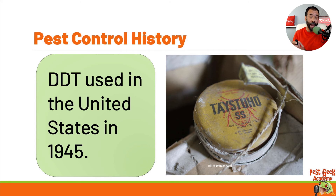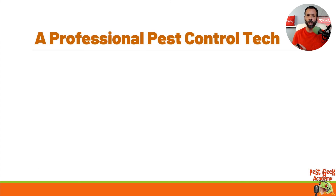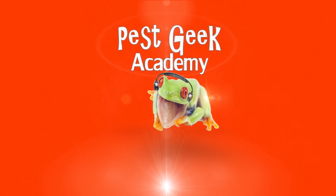DDT was later banned in the 1970s because of all the environmental hazards associated with it. That's just a brief history of chemistry — you can see that pesticides have been used for a very long time.